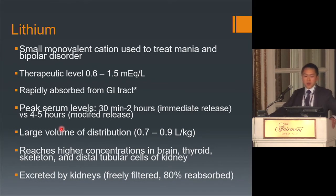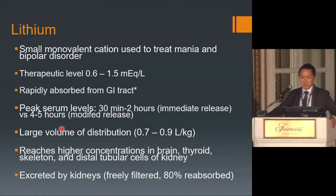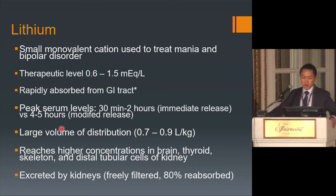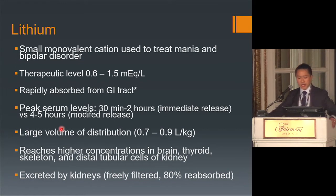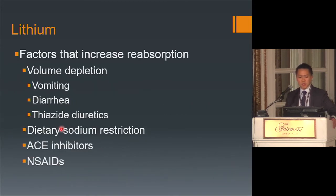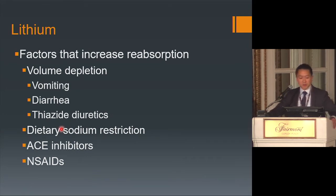Lithium is a small monovalent cation used to treat mania and bipolar disorder, with a narrow therapeutic level of 0.6–1.5 mEq/L. It's rapidly absorbed from the GI tract, reaching serum levels within 30 minutes to 2 hours (immediate release) or 4–5 hours (modified release). It has a large volume of distribution, reaching higher concentrations in the brain, thyroid, bones, and distal tubular cells. Lithium is excreted primarily by the kidney — freely filtered with about 80% reabsorbed. Any factor increasing sodium reabsorption — volume depletion, diuretics, dietary sodium restriction, ACE inhibitors, or NSAIDs — also increases lithium reabsorption.